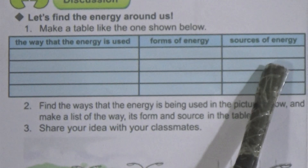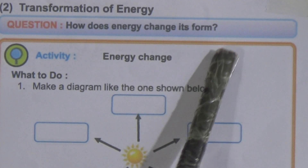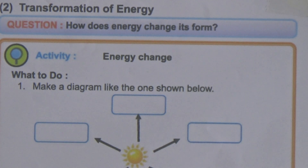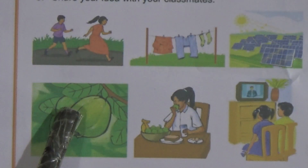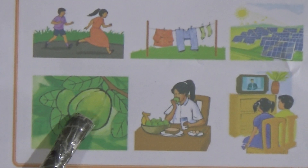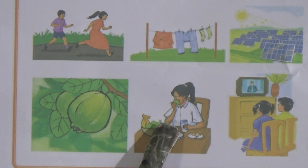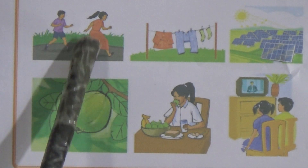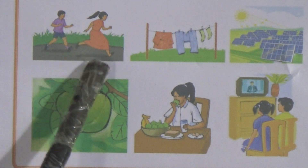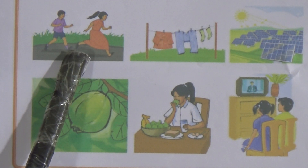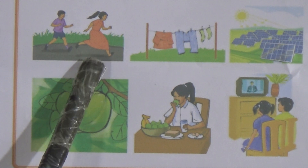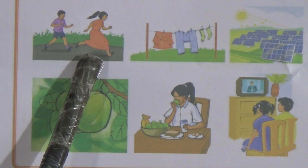Now come to the transformation of energy — how does energy change its form? Looking at the picture, when we eat food such as a guava, plants use sunlight through photosynthesis and convert light energy to chemical energy. When we eat that food, we get chemical energy. When we walk, run, or do work, we use that chemical energy, which is then transformed into mechanical energy.